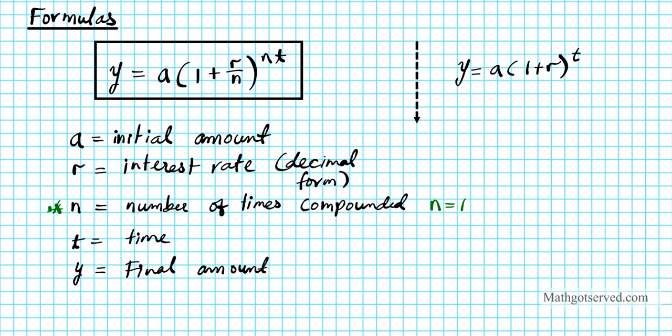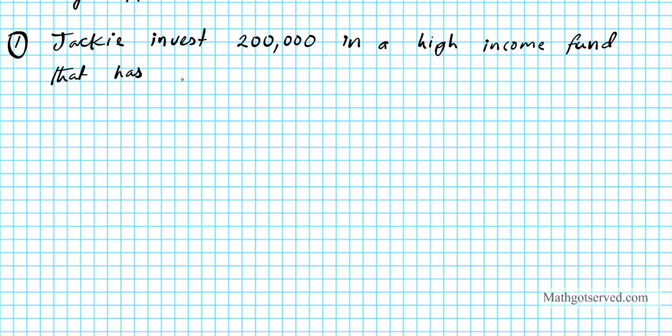So let's take a look at the first example. Question number 1. Jackie invests $200,000 in a high income fund that has an annual interest of 12%. If the interest is being compounded quarterly...